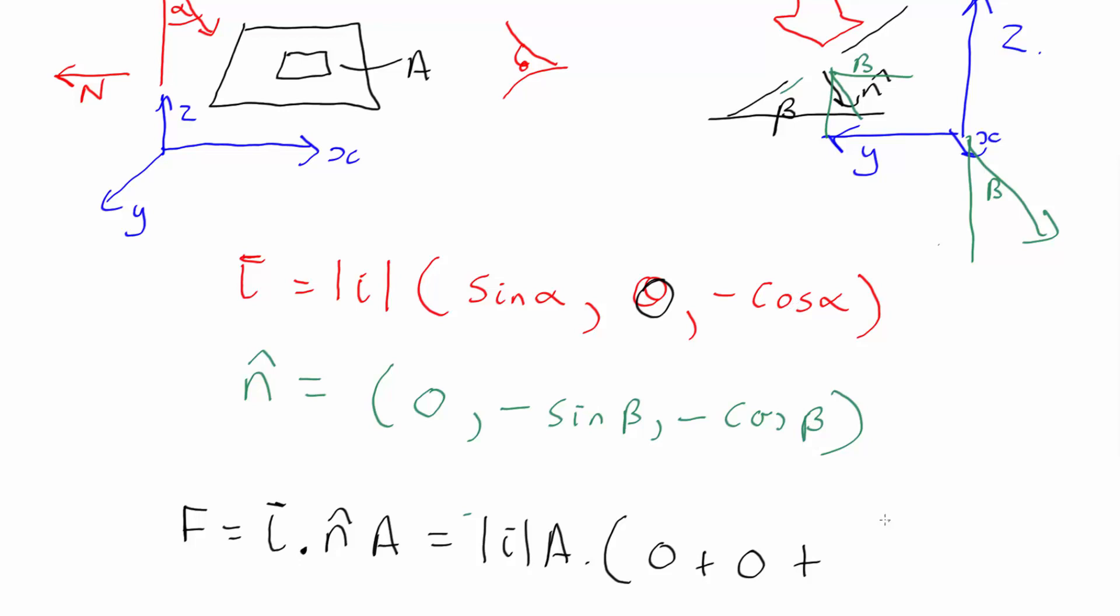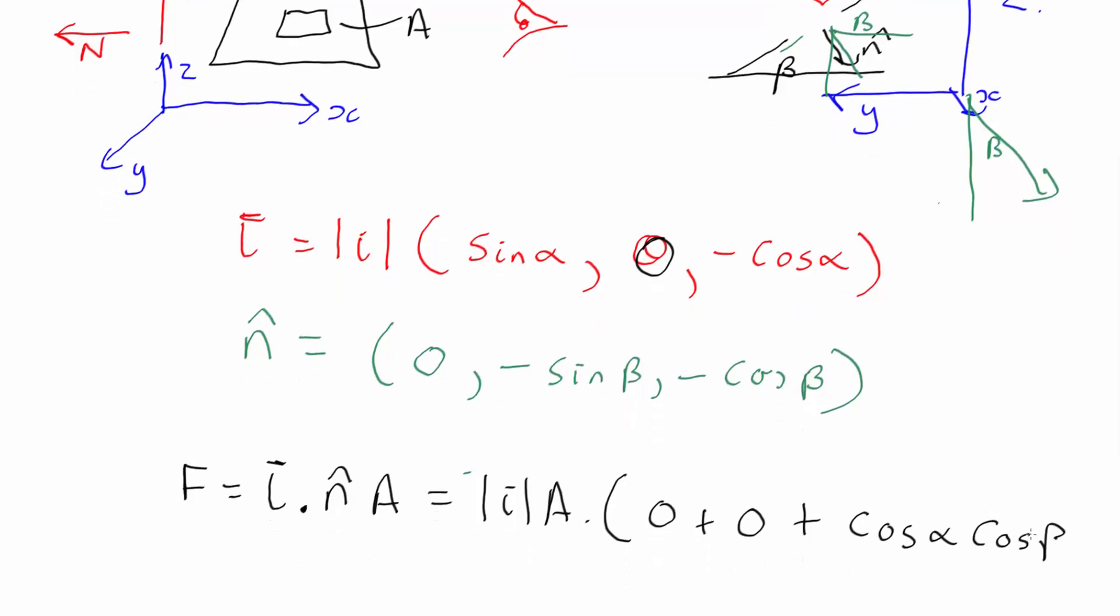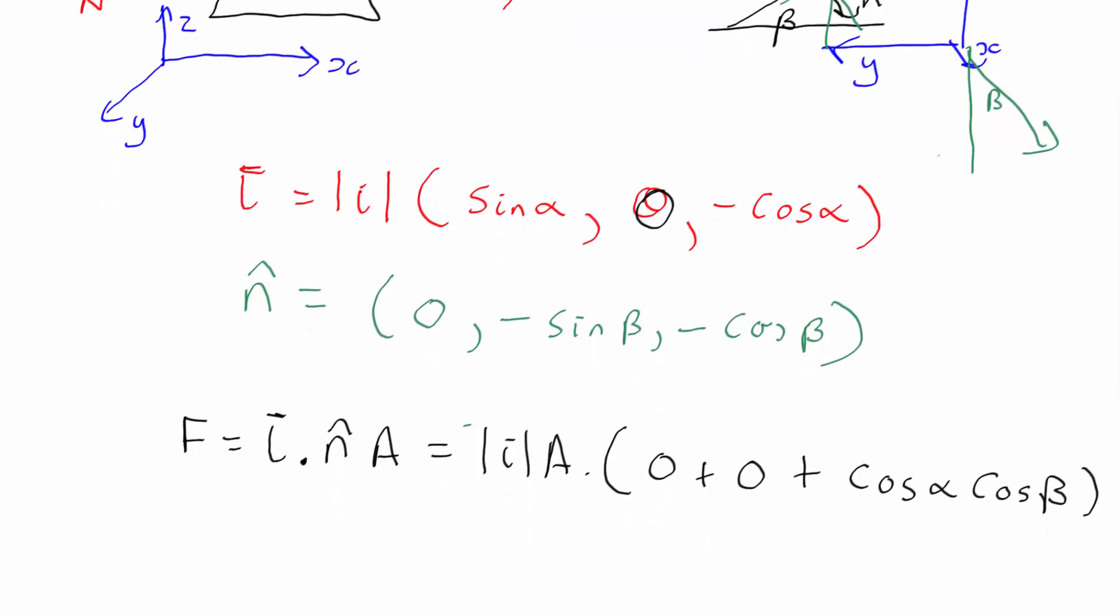so that's going to be cos alpha cos beta. Minus times minus is plus, so it turns out the flux through is just mod of the intensity times the area, cos alpha cos beta. Very easy.